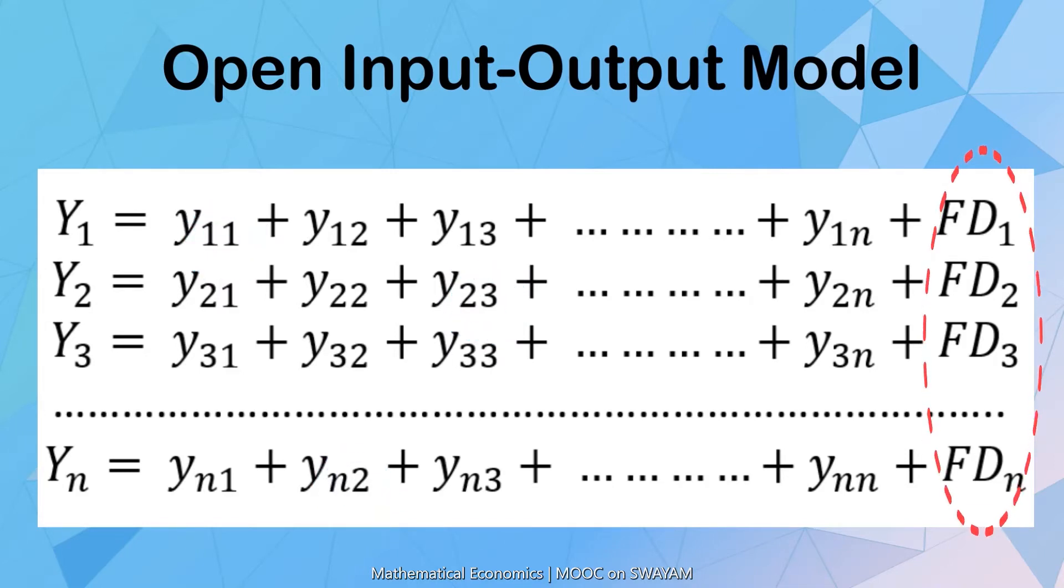Fd1, Fd2, up to Fdn are the final demand of n-sectors.